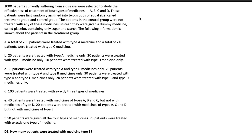A thousand patients currently suffering from a disease were selected to study the effectiveness of treatment of four types of medicines A, B, C, and D. These patients were first randomly assigned into two groups of equal size — 500 and 500 — called the treatment group and the control group. The patients in the control group were not treated with any of these medicines.